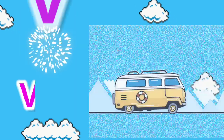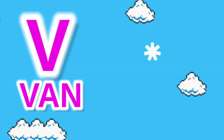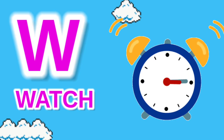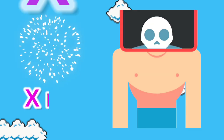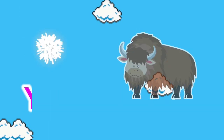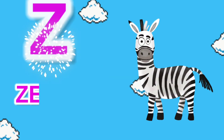V for when, W for watch, X for X, Y for young, Z for zebra.